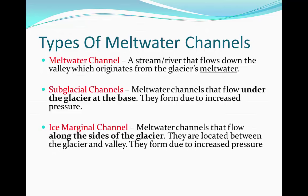Ice marginal channels are meltwater channels that flow along the sides of the glacier. These are located between the glacier and the valley wall. They form due to increased pressure, so they're effectively like subglacial channels but located on the sides.